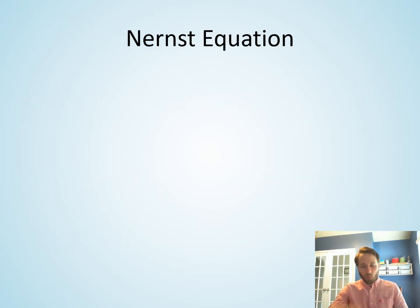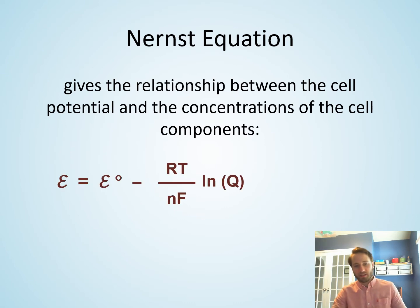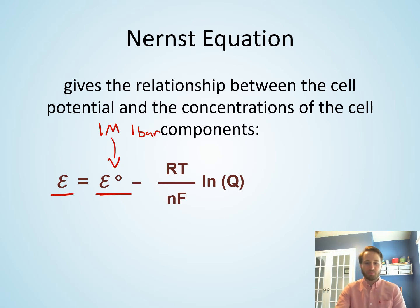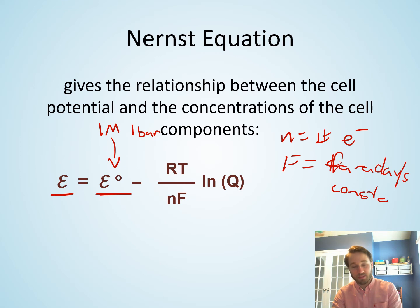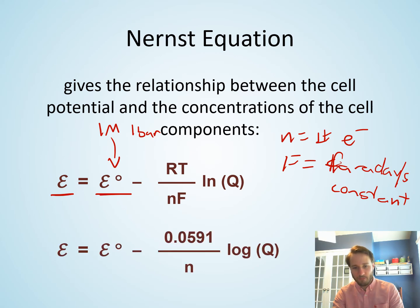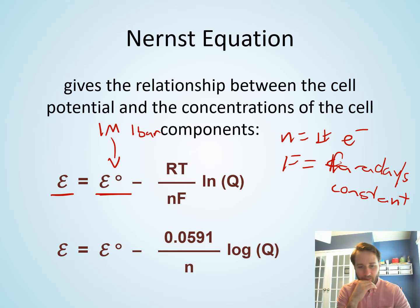That quantitative relationship is given by the Nernst equation. The cell potential for any electrochemical reaction equals the standard cell potential minus RT divided by nF, times the natural log of Q — where R is the ideal gas constant, T is temperature, N is the number of electrons transferred, F is Faraday's constant (96,485 C/mol), and Q is the reaction quotient at non-equilibrium values.